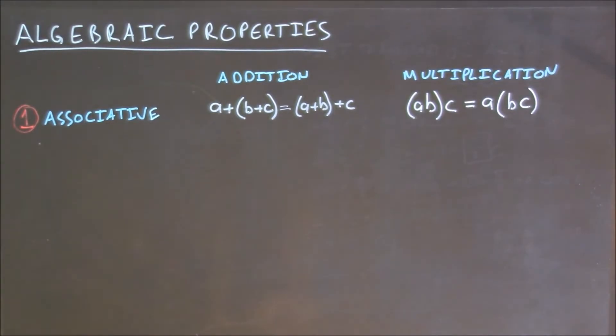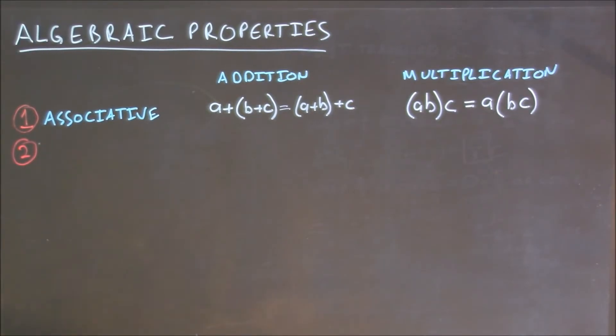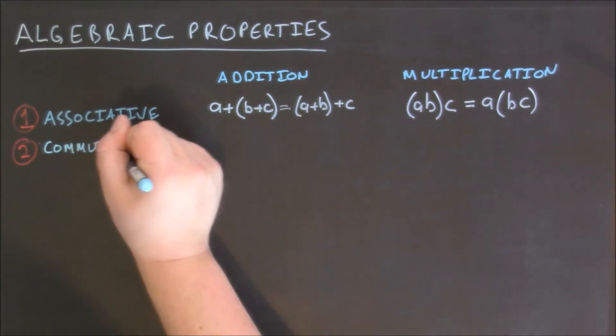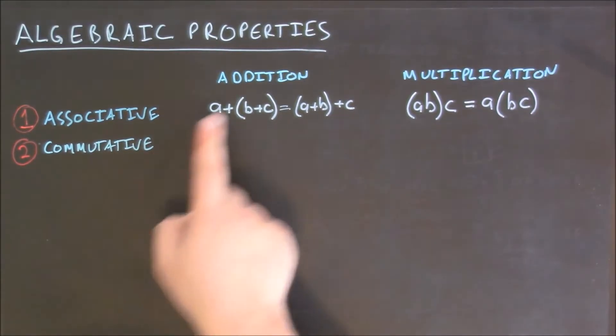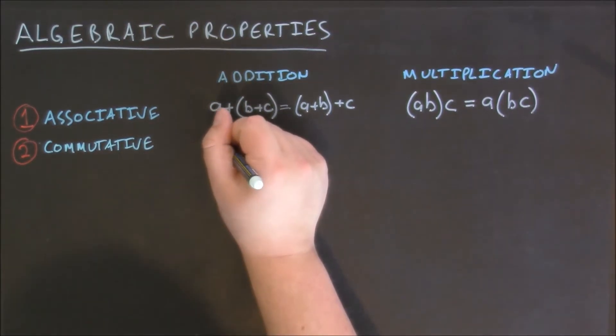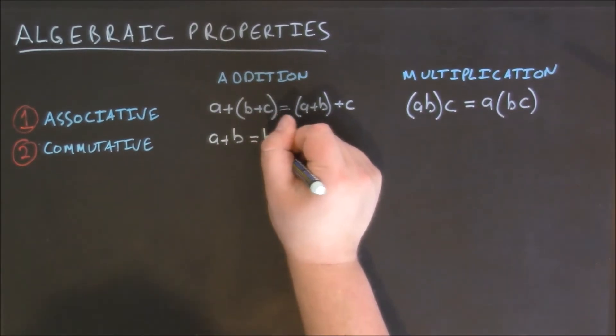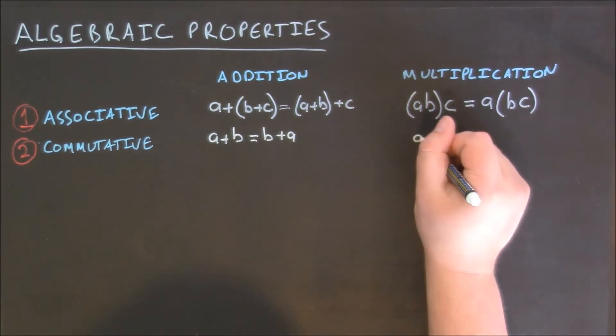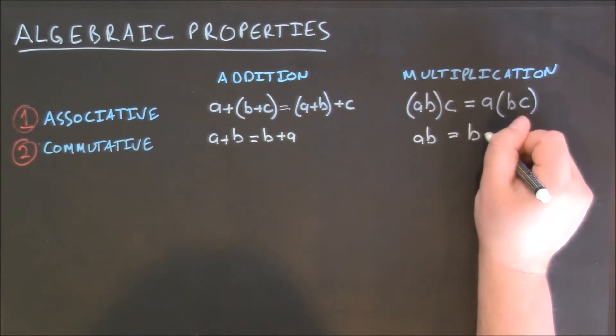The next property we have is the commutative property. The commutative property also has a part for addition and multiplication and it says that if I have a plus b, I can rewrite this as b plus a. And for multiplication, if I have a times b, I can rewrite that as b times a.